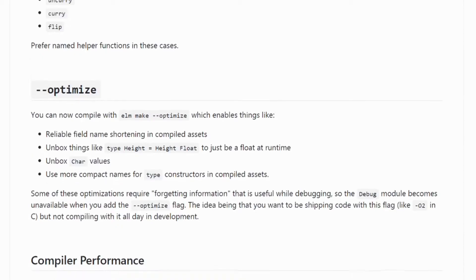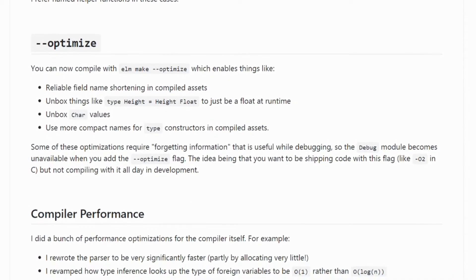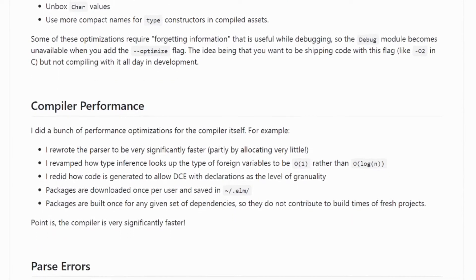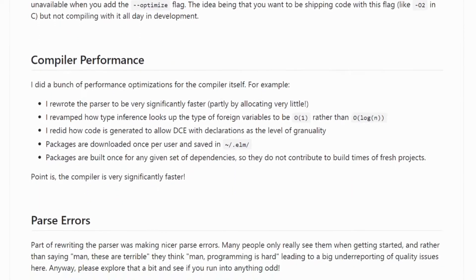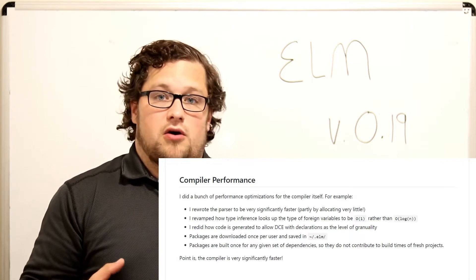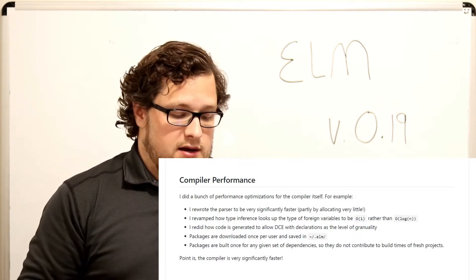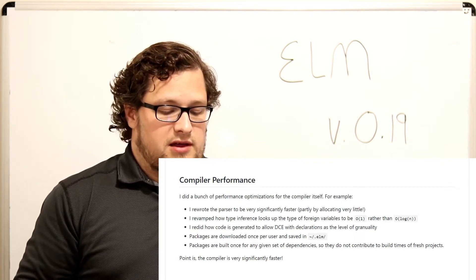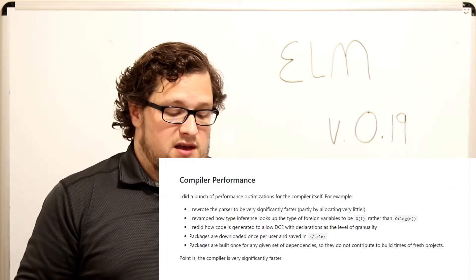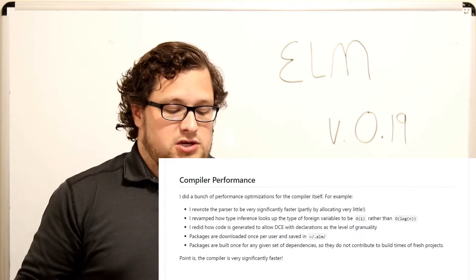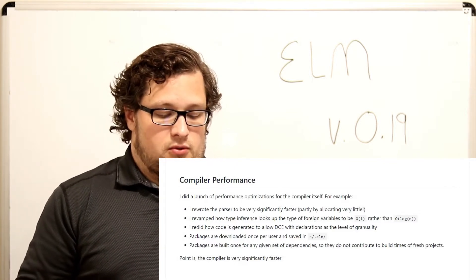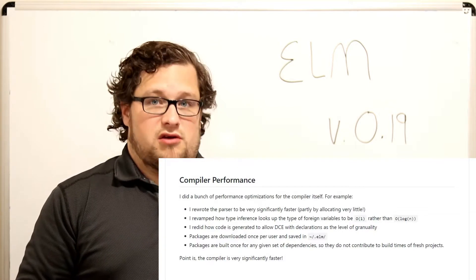The next thing is compiler performance. There were a bunch of performance optimizations for the compiler itself. The parser was rewritten to be very significantly faster, partly by allocating very little. Type inference was revamped to look up the type of foreign variables in O(1) constant time rather than O(log n) logarithmic time — a huge gain. Code generation was reworked to allow DCE at declaration-level granularity. Packages are downloaded once per user and saved in the `~/.elm` folder, and built once for any given set of dependencies so they don't contribute to build times of fresh projects. The compiler is now very significantly faster.